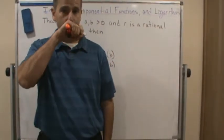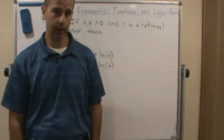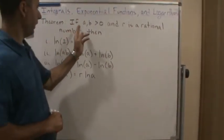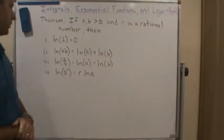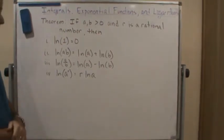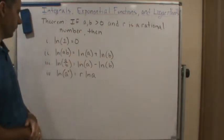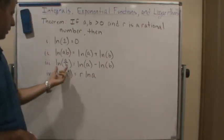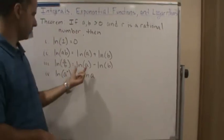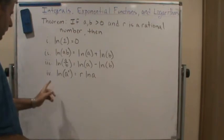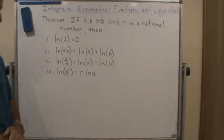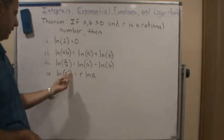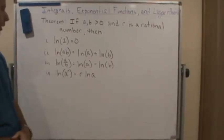Welcome. Today we're going to talk about the properties of logarithms. We haven't proved any of these yet, which we will. Notice that if a and b are greater than zero and r is a rational number, these properties hold: the logarithm of one is zero; the natural log of the product ab equals the natural log of a plus the natural log of b; the natural log of the quotient a over b equals the natural log of a minus the natural log of b; and the natural log of a raised to a rational power r equals r times the natural log of a — we can pull the exponent out in front.